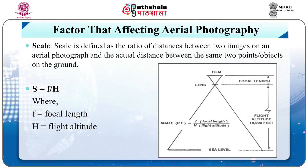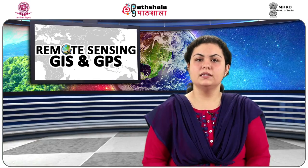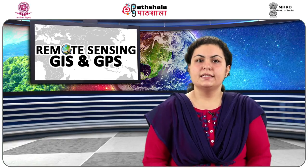Scale is defined as the ratio of distances between two images on an aerial photograph and the actual distance between the same two points or objects on the ground. In other words, it is the ratio of f upon H, where f is the focal length of the camera lens and H is the flying height above the mean terrain. Change in scale from one photograph to another is because of variation in flying height. Other factors that further affect scale variations are tilt and relief displacements.